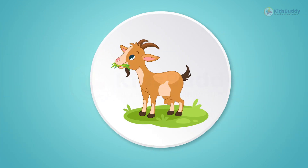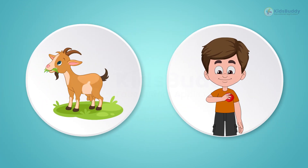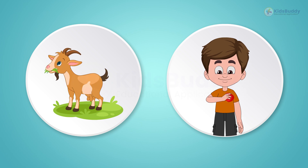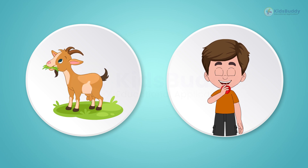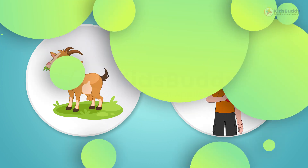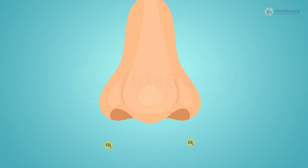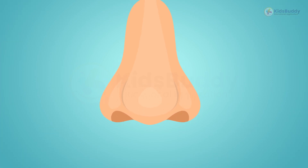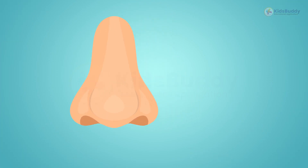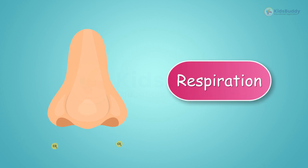See this — a goat is eating grass. Animals and humans consume these plants, and thus the carbon is transferred to humans and animals. Oxygen is inhaled and the carbon is exhaled back to the atmosphere. This process is called respiration.